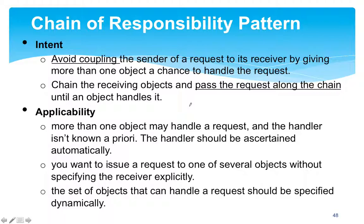Here at UCO, the chain of command starts with a staff or faculty member. If they cannot handle a situation that is out of their authority, it is forwarded to the next in the chain of command: department chairperson, then dean of the college, then provost, then president. That idea is implemented in the Chain of Responsibility pattern.